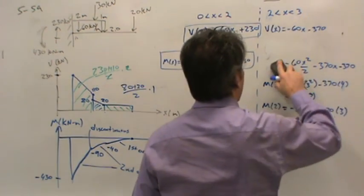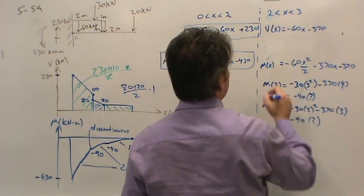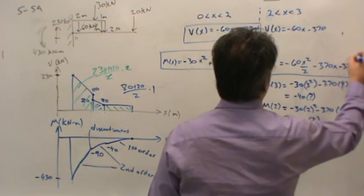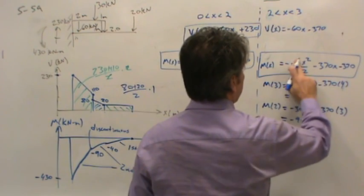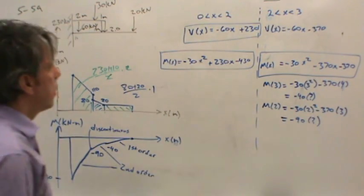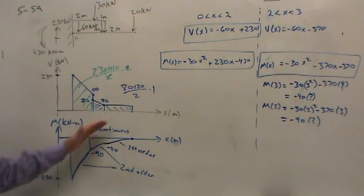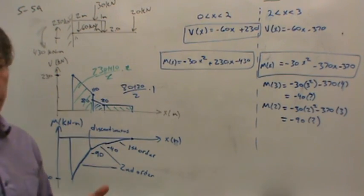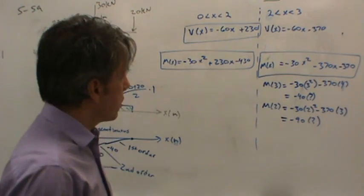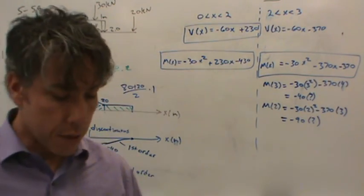Here's the moment as a function of x. Notice there's nothing really interesting to do here. There's nothing terribly difficult. If the moment were to cross the axis at some point, we would want to find that crossing. And so we'd have to use the moment equations to do it. In this case, it doesn't cross the axis, so we're finished.